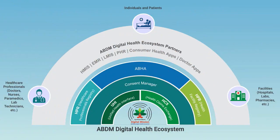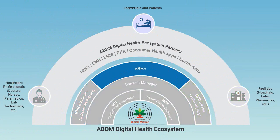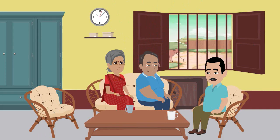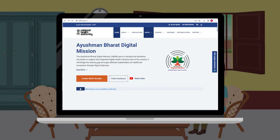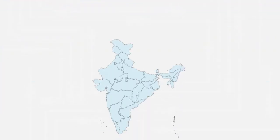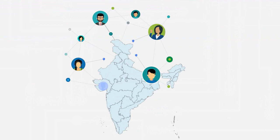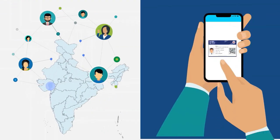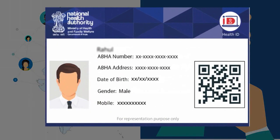Let us first understand the concept behind ABHA and how individuals like Rahul can avail its benefits. Ever since Rahul came to know about ABDM, he is really excited to learn how he and his family members can participate in ABDM. He visits his family physician, Dr. Rashid, to learn about it. Dr. Rashid explains that any individual can participate in the ABDM ecosystem by just creating their unique health identifier, ABHA.